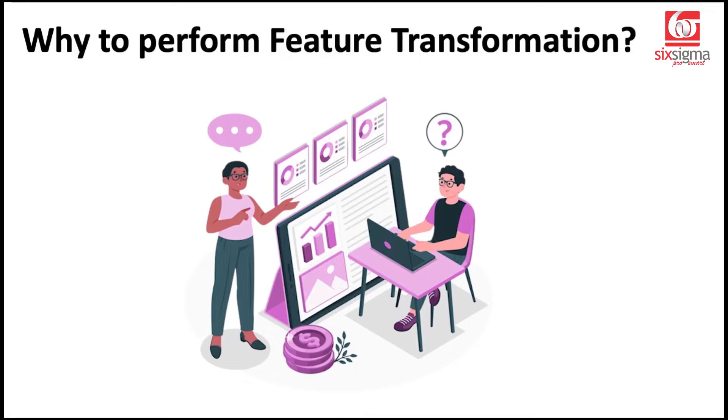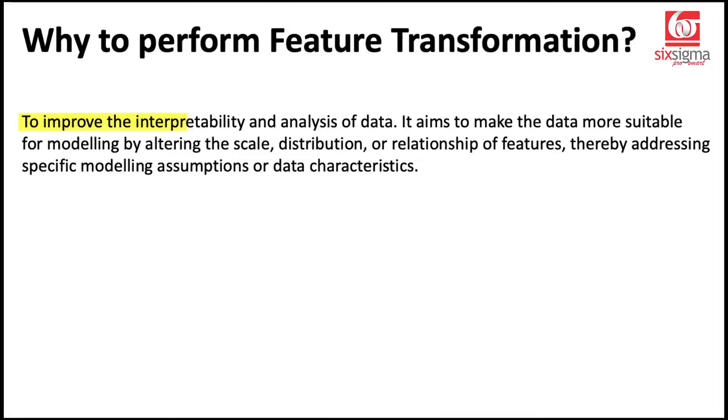Let's discuss why we perform feature transformations. The most important point is that feature transformation helps us improve the interpretability of the data. The original data could be in any format, but applying a simple transformation could bring it to a format which is very easy to interpret for us. It aims to make the data more suitable by altering its scale, distribution, or relationship with features.